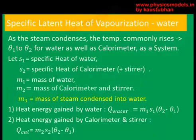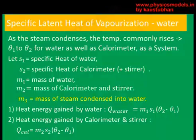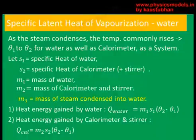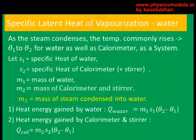Heat energy equals mass times specific heat times change in temperature — just plug that in. The heat energy gained by the water, Q_water, is the mass of water times specific heat times the extent it warmed up: (θ2 − θ1). Similarly, the heat energy gained by the calorimeter and stirrer is their mass times their specific heat times the same warm-up temperature (θ2 − θ1).